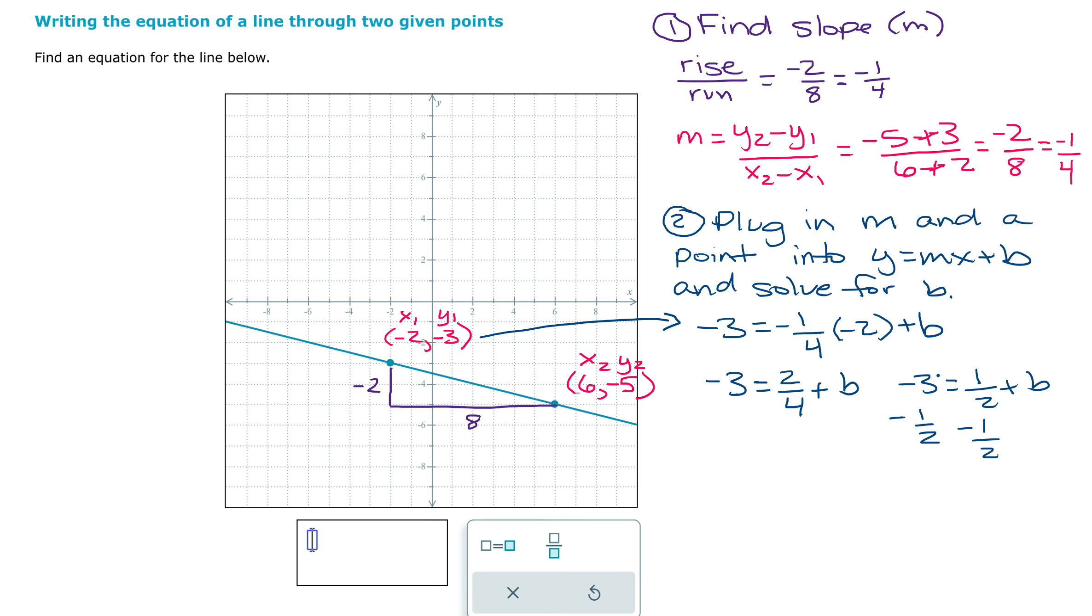Now, when you're dealing with a number minus a fraction, that's probably where this is going to be a little bit tricky. Negative three minus one-half. In order to combine these, we need to have a common denominator. So I need to get a common denominator of two for my whole number.